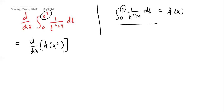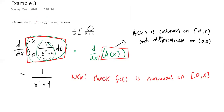So what does that say about how we find this derivative? We have to use the chain rule, because we have a composition. By the chain rule: take the derivative of the outside function, leave the inside the same, and multiply by the derivative of the inside function, which in this case is 2x. If your upper bound is just x and you want to find the derivative, just replace the t's with x. If the upper bound involves a function of x, you apply this extra chain rule step.